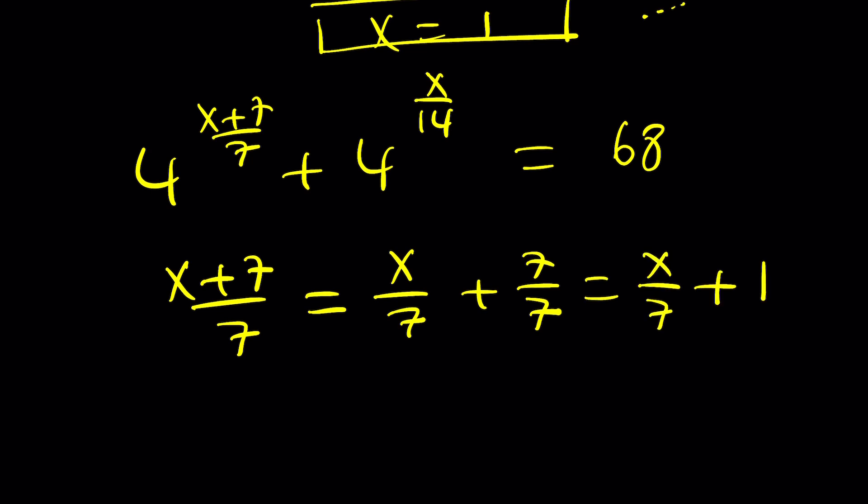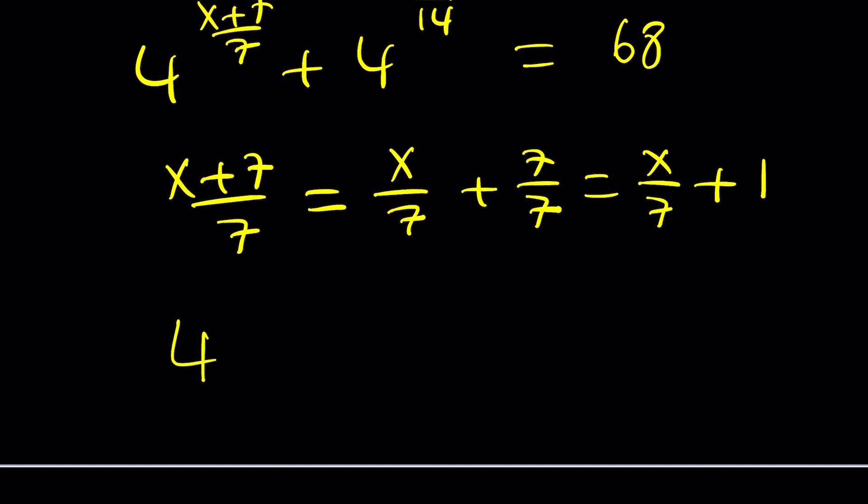How does this help? Let's go ahead and plug it in. 4 to the power x over 7 plus 1, plus 4 to the power x over 14 equals 68. This may still look complicated to you and that's perfectly fine. Don't worry, we're going to simplify it. We're going to do it step by step. So our first step was to take the fraction because the numerator is made up of two terms we were able to split it up.